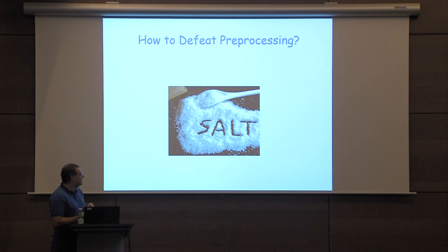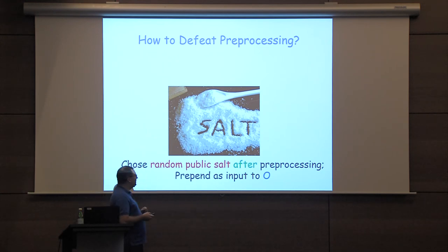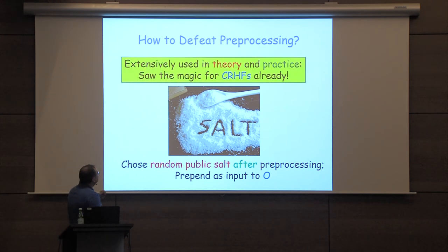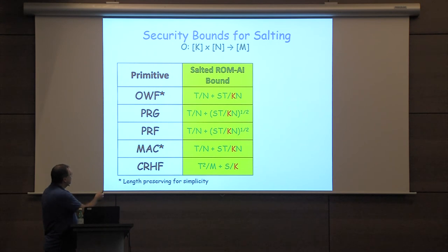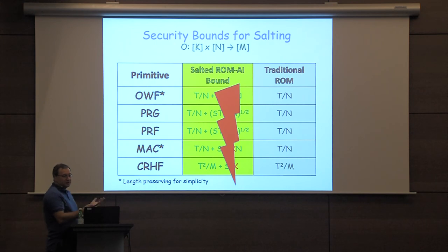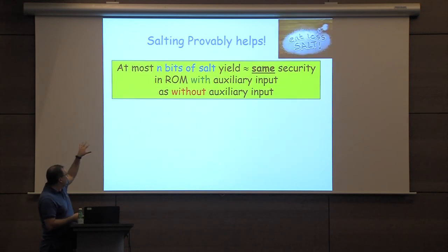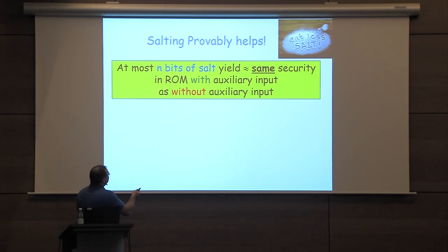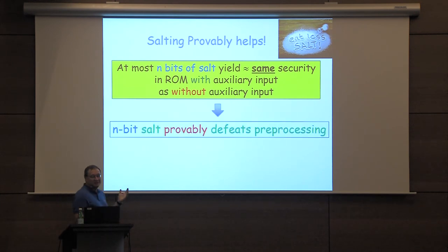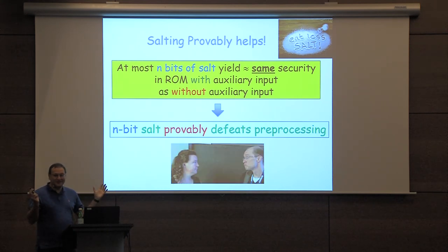Salting is extensively used in theory and practice. We show that all our bounds generalize to the salted setting, and you get this extra factor of the salt size. If you compare with the traditional random oracle bounds, in every case, if you make the salt long enough, you suddenly start to match those bounds — the random oracle bound becomes essentially the same as the bound in the standard model. If you do the calculation, at most log of capital N times little n bits of salt yield almost exactly the same security in the random oracle with auxiliary input as without auxiliary input. So informally, salt probably defeats pre-processing, and theory and practice can be happy.